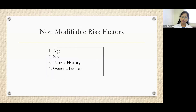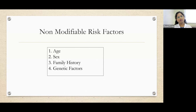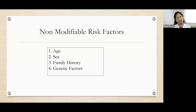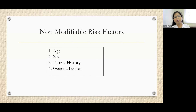Non-modifiable risk factors include age, sex, family history, and genetic factors. We cannot change a person's age or gender. Some patients have family histories of myocardial infarction or cardiovascular disease, and that can transfer to them. Genetic factors like diabetes, hypertension, and asthma can all transfer to the next generation — these are non-modifiable risk factors that we cannot change.